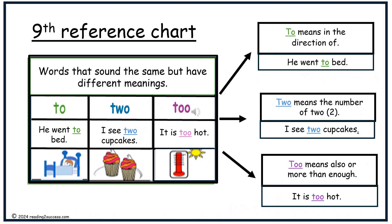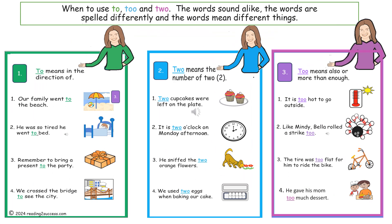Ninth reference chart. The words sound alike but are spelled differently and mean different things. The first, to, means in the direction of — he went to bed. The second, two, means the number two — I see two cupcakes. And the third, too, means also or more than enough — it is too hot. This reference chart demonstrates four sentences showing how each word is used.